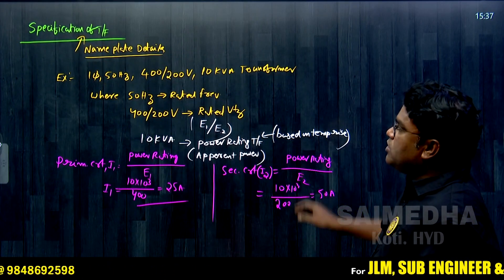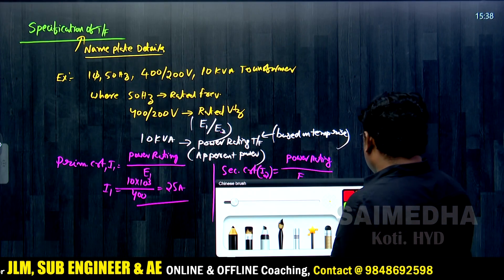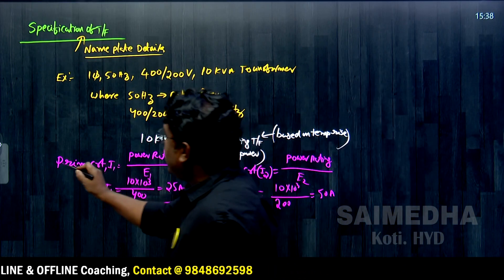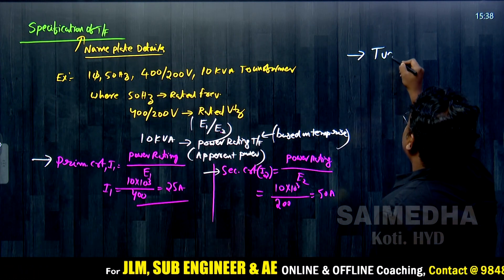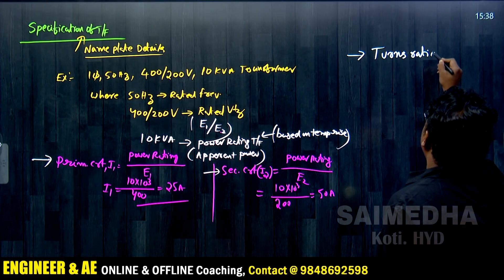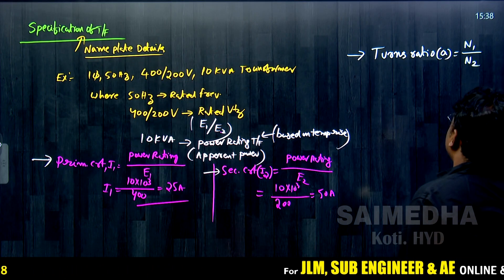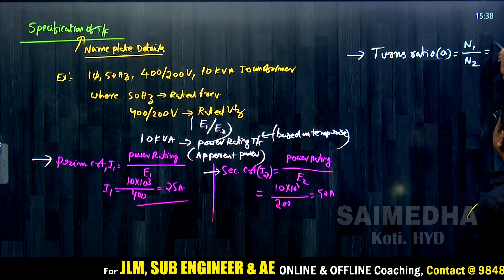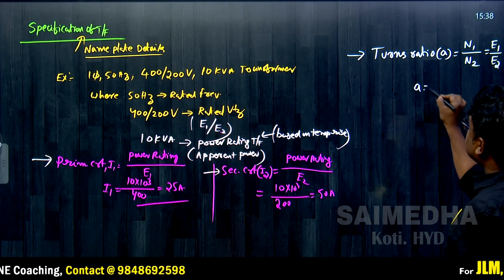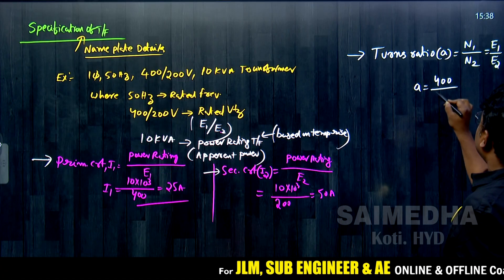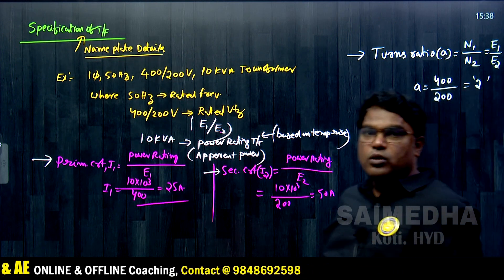From the specification we can also calculate the turns ratio. The turns ratio 'a' is defined as N1 divided by N2, which is also equal to E1 divided by E2: 400 divided by 200, giving a turns ratio of 2.